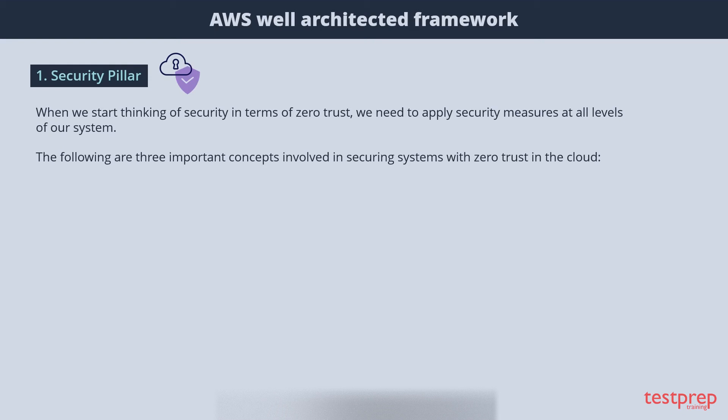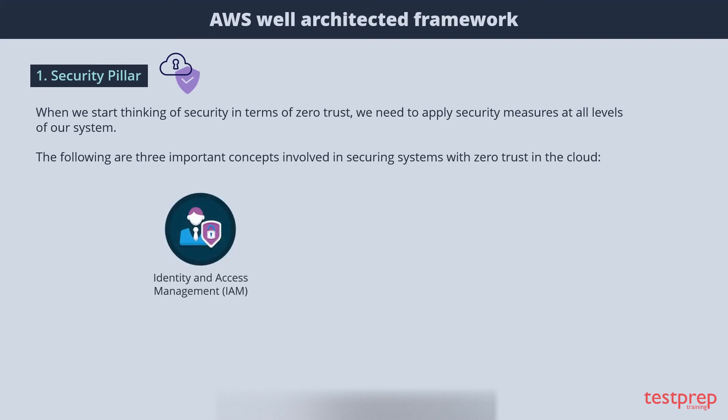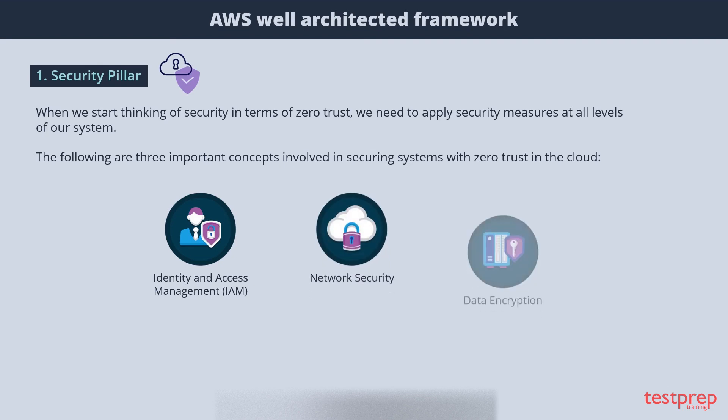In the Security pillar, when we start thinking about security in terms of zero trust, we need to apply security measures at all levels of our system. The three important concepts involved in securing systems with zero trust in the cloud are: identity and access management, network security, and data encryption.